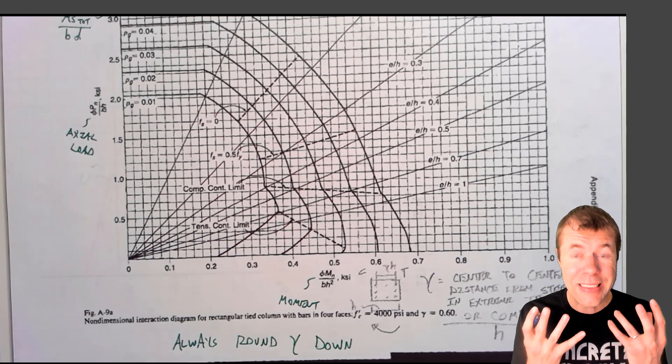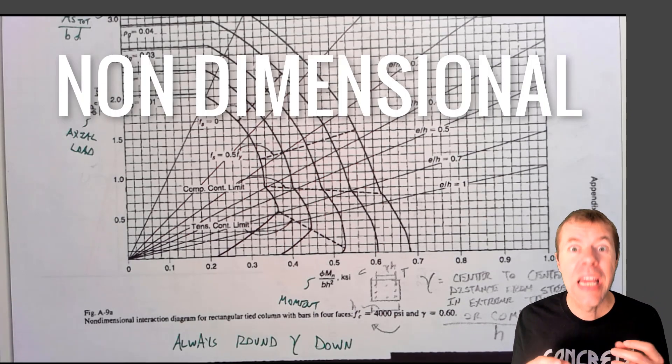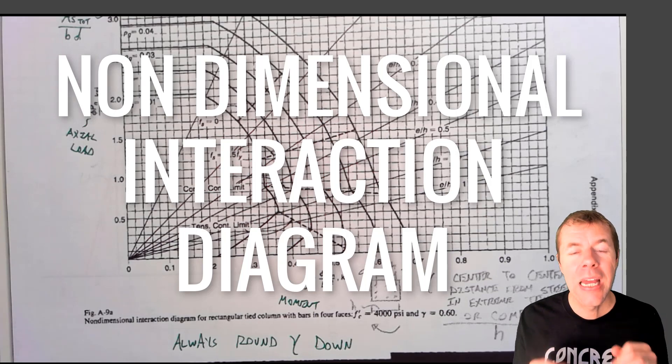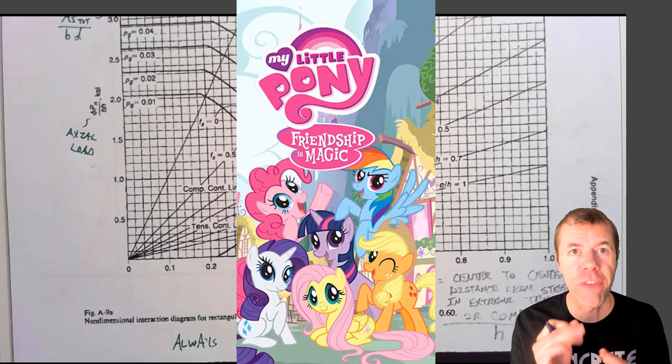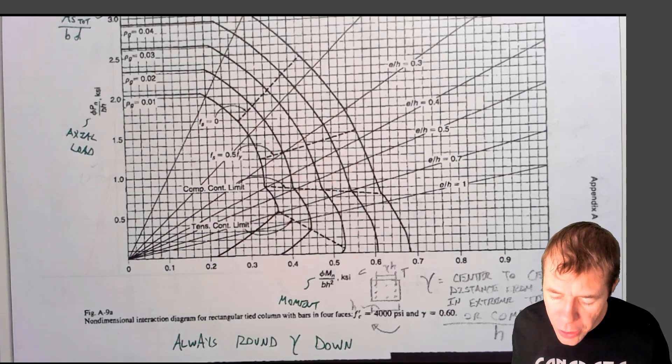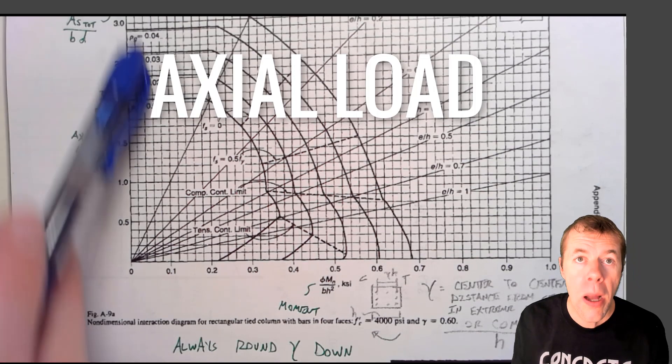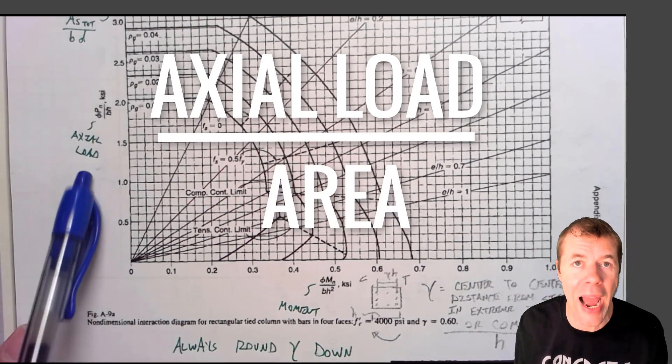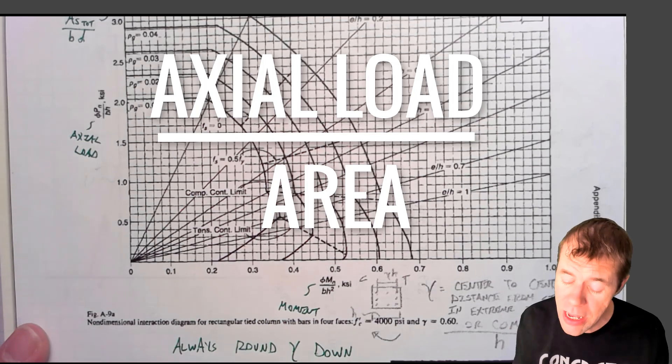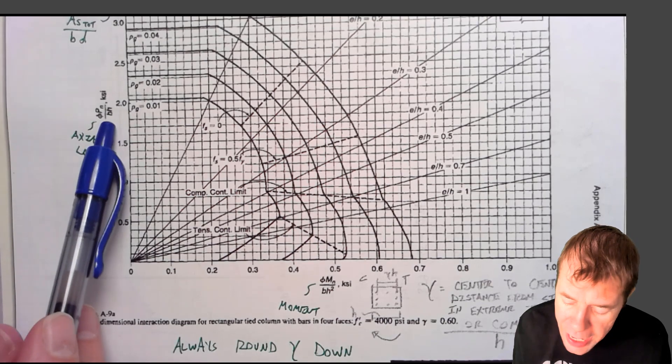This crazy looking diagram is a non-dimensional interaction diagram. If you have to do column design, it will become your friend. On this diagram, this is the axial load divided by BH. This is like the axial stress, the average axial stress on the column.